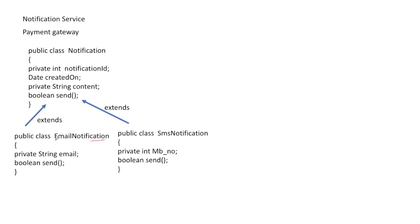We override the send() function in each child class. EmailNotification requires the customer's email address; SMSNotification requires the customer's mobile number. Calling send() on either class will correspondingly send the notification to the customer.